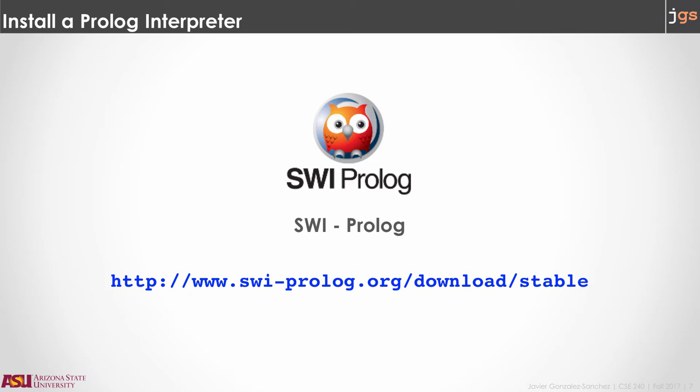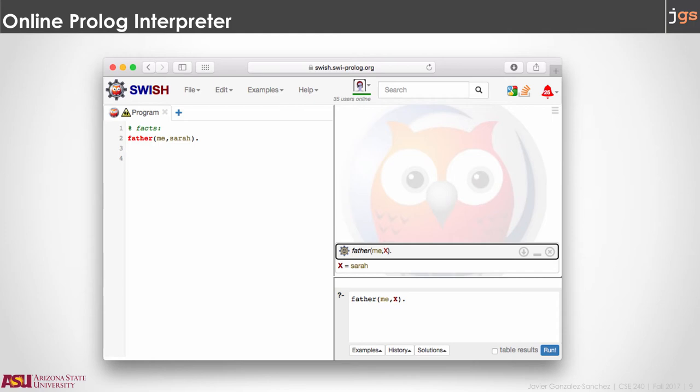To start working with the new language, we need an interpreter. Your first assignment is to install an interpreter for Prolog. I would recommend this one — you can download it from the URL shown. This one works in Windows, Mac, and Linux. There are several options; this is only one of them. There is also an option for an online interpreter, so you do not need to install anything on your computer. You can just go to the URL shown, and on that web page you can have access to an interpreter for Prolog that is exactly the same as the one I am recommending you to download.